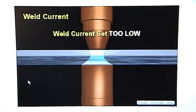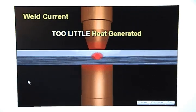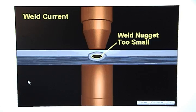If weld current is set too low, too little heat will be generated, and the weld nugget will be too small or not formed at all.